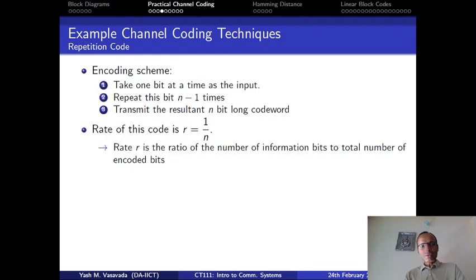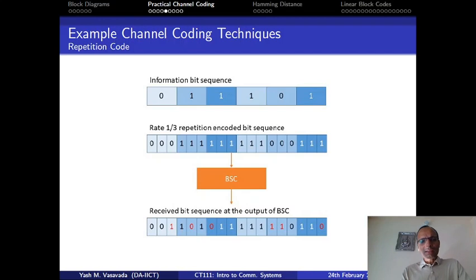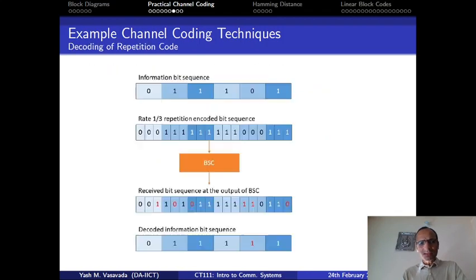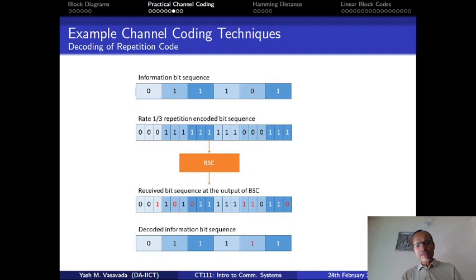We also talked about the repetition code earlier whose rate is 1 over n. And the decoding of the repetition code follows this majority voting procedure which is diagrammatically illustrated in this slide, where we essentially take the majority vote out of n bits that are received and decide which bit was transmitted. So the decoding of repetition code should be very much familiar to you.